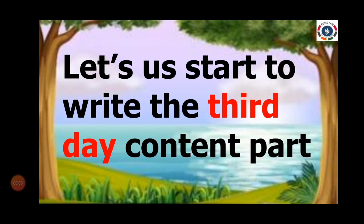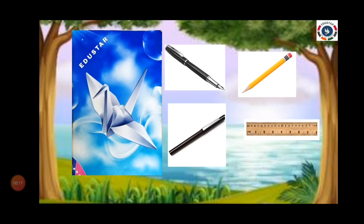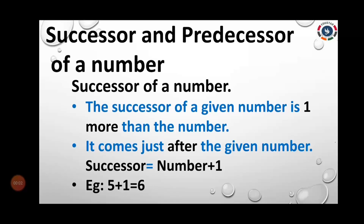Now let us start to write the theory content part. Listen to me — what we are going to write. Okay, let's move to write now. Take your classwork note, blue pen, black stick, pencil and ruler. Have you taken all those things? Yeah, let's start to write.